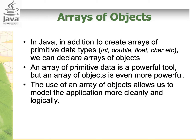In Java, in addition to creating arrays of primitive data types int, double, float, and char, we can declare arrays of objects, as shown in the previous slide with the example of arrays of int and arrays of string objects. An array of primitive data is a powerful tool, but an array of objects is even more powerful. The use of an array of objects allows us to model the application more cleanly and logically. For example, we can have an array from any user-defined class.